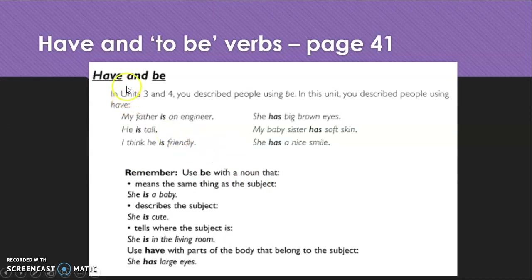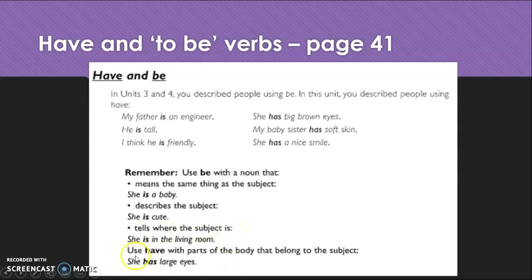Next, we're going to have a look at 'have' and the 'to be' verb, which is on page 41. Remember, 'be' is used with a noun — that can mean the noun is the same thing, so 'she is a baby'. It can be used to describe the subject, or where the subject is. We use 'have' with body parts that belong to the subject — so, 'big brown eyes', 'soft skin'.